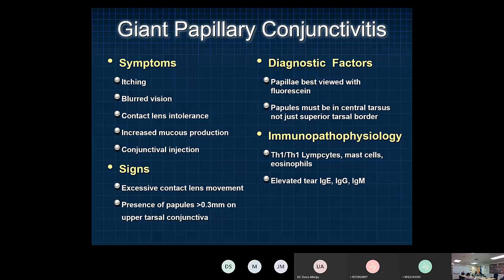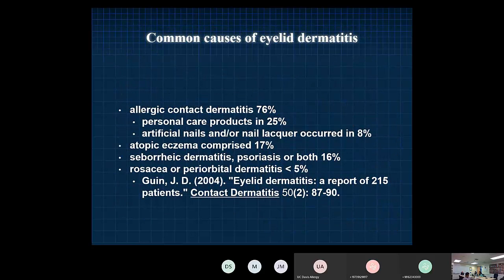GPC (giant papillary conjunctivitis) presents with itching and blurring, looks much like other conjunctivitis, but is most commonly associated with contact lens wear, contact lens intolerance, or an exposed suture in the eye rather than IgE-mediated allergy. Eyelid dermatitis causes include personal care products such as nail lacquer and mascara, atopic dermatitis (about 20%), seborrheic dermatitis, rosacea, and periorbital involvement.